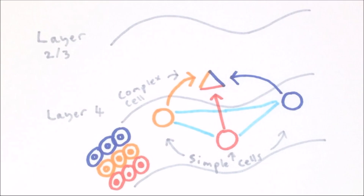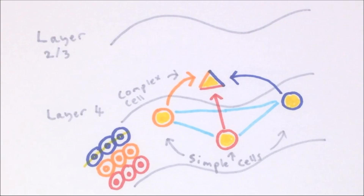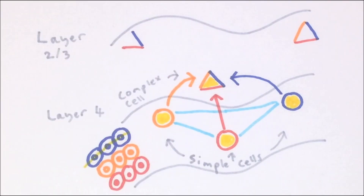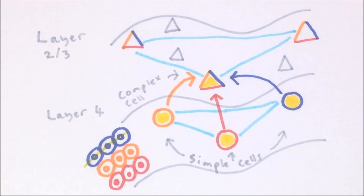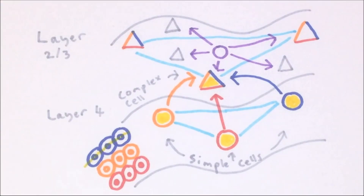Neurons in layers two and three wire in a similar way to layer four neurons in the primary visual cortex. Layers two and three contain neurons known as complex cells. These receive input from multiple simple cells responding to lines with the same orientation but from different regions of space. This means complex cells respond to a line of a certain orientation anywhere in a much larger region of space. Again, in layers two and three, neurons preferentially connect to and form strong synapses with other neurons responding to lines with the same orientation.